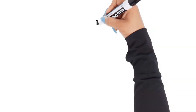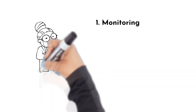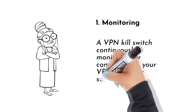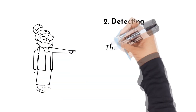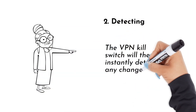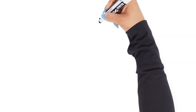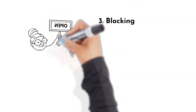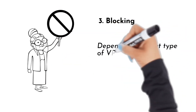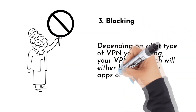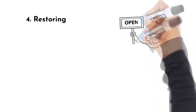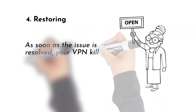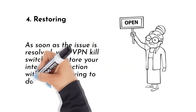Here is a more detailed breakdown. A VPN Killswitch continuously monitors your connection to your VPN server by scanning for changes in status or IP address. Second, it will instantly detect any changes that could prevent your VPN from working properly. Then comes blocking — depending on what type of VPN you're using, your Killswitch will either block certain apps or your entire device from accessing the internet. Finally, as soon as the issue is resolved, it will restore your internet connection without you having to do anything.